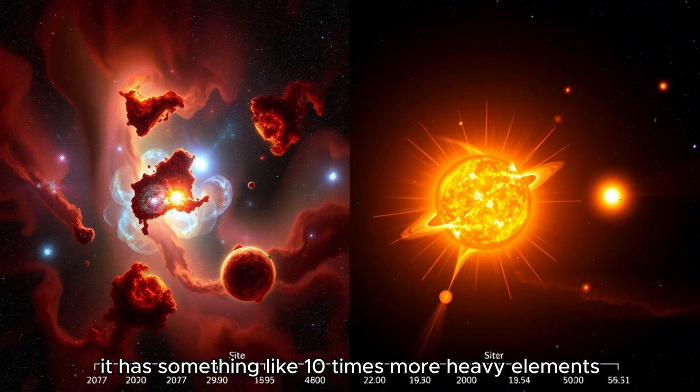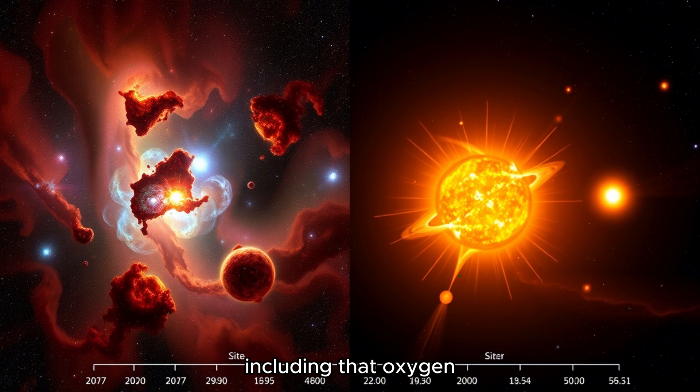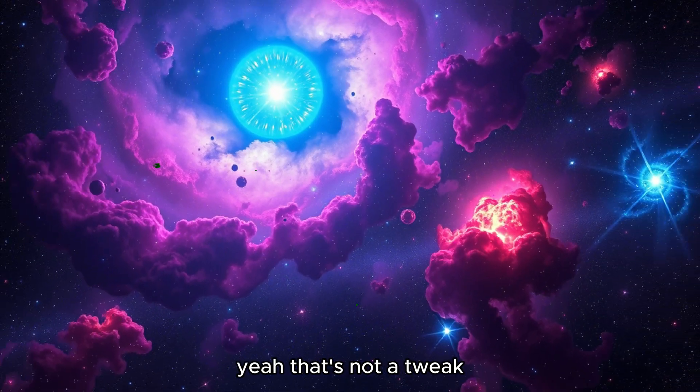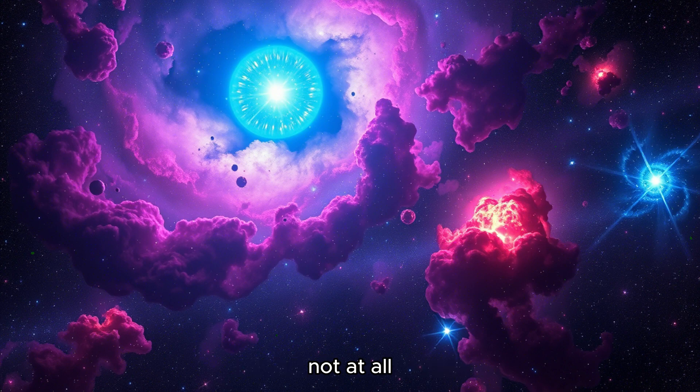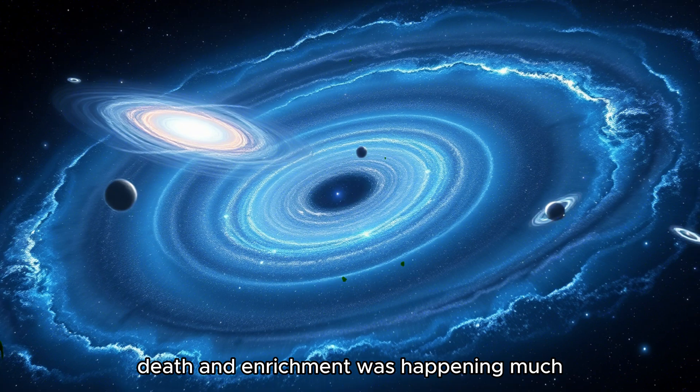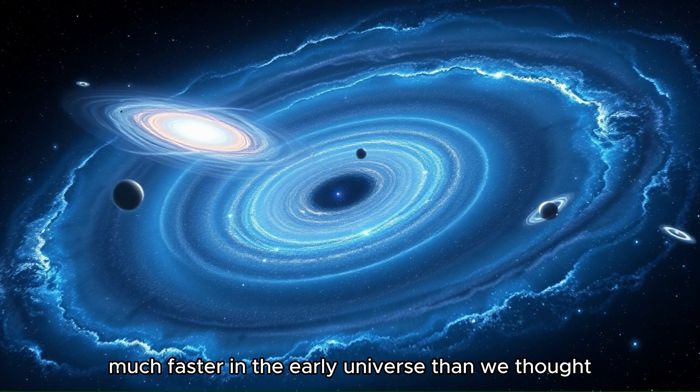it has something like 10 times more heavy elements, including that oxygen, than the models said should be possible that early on. 10 times? Okay, yeah, that's not a tweak. Not at all. It implies that the whole cycle of star birth, death, and enrichment was happening much, much faster in the early universe than we thought.